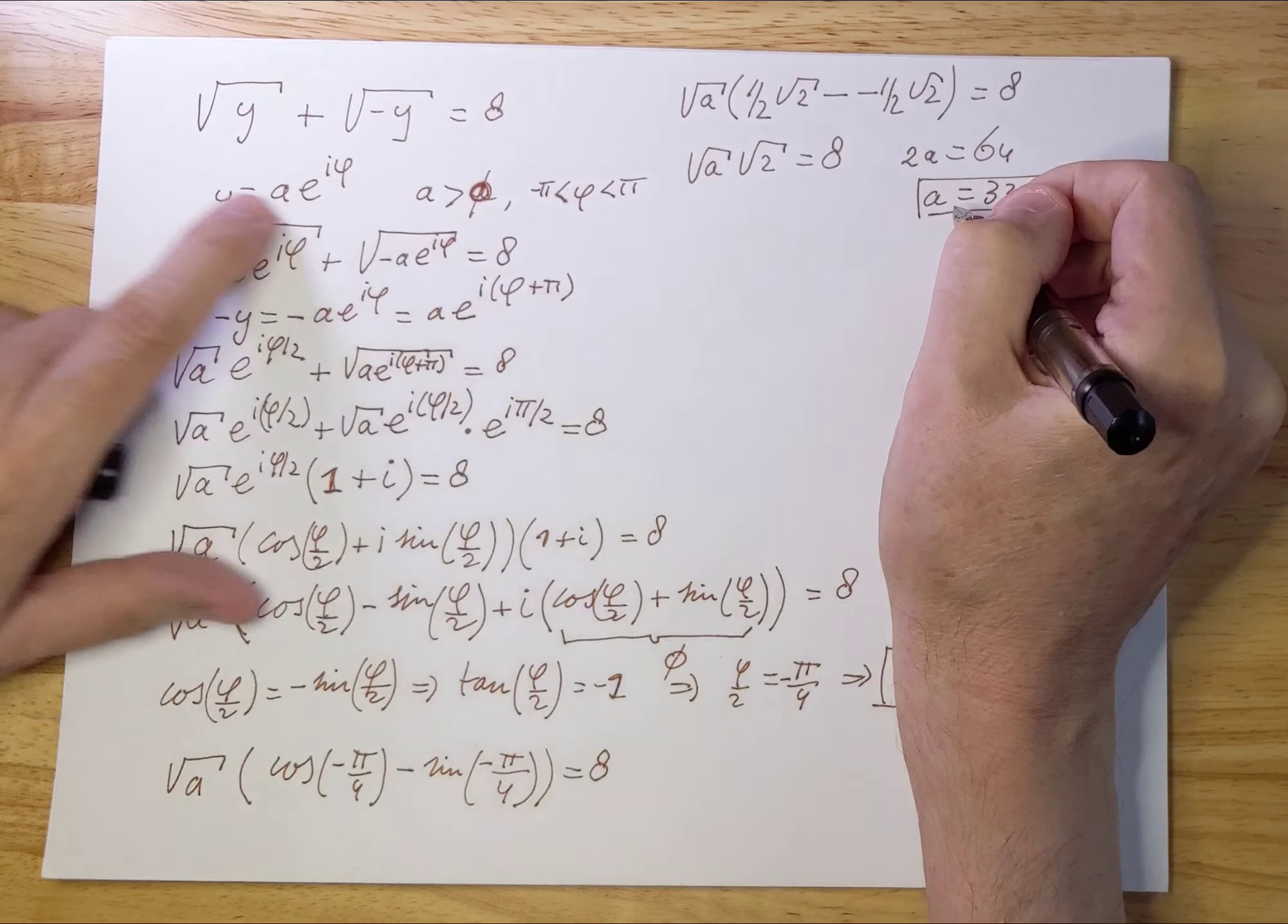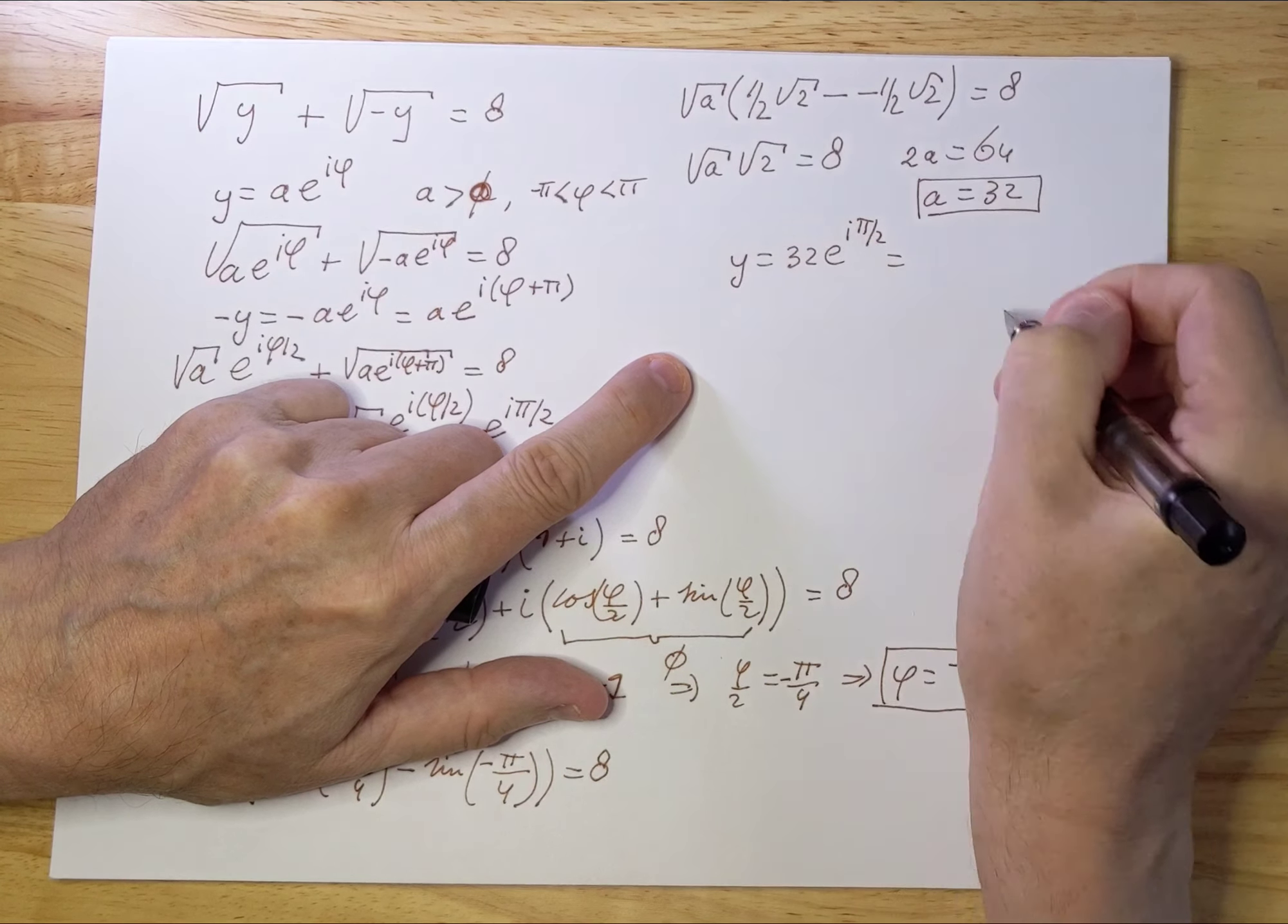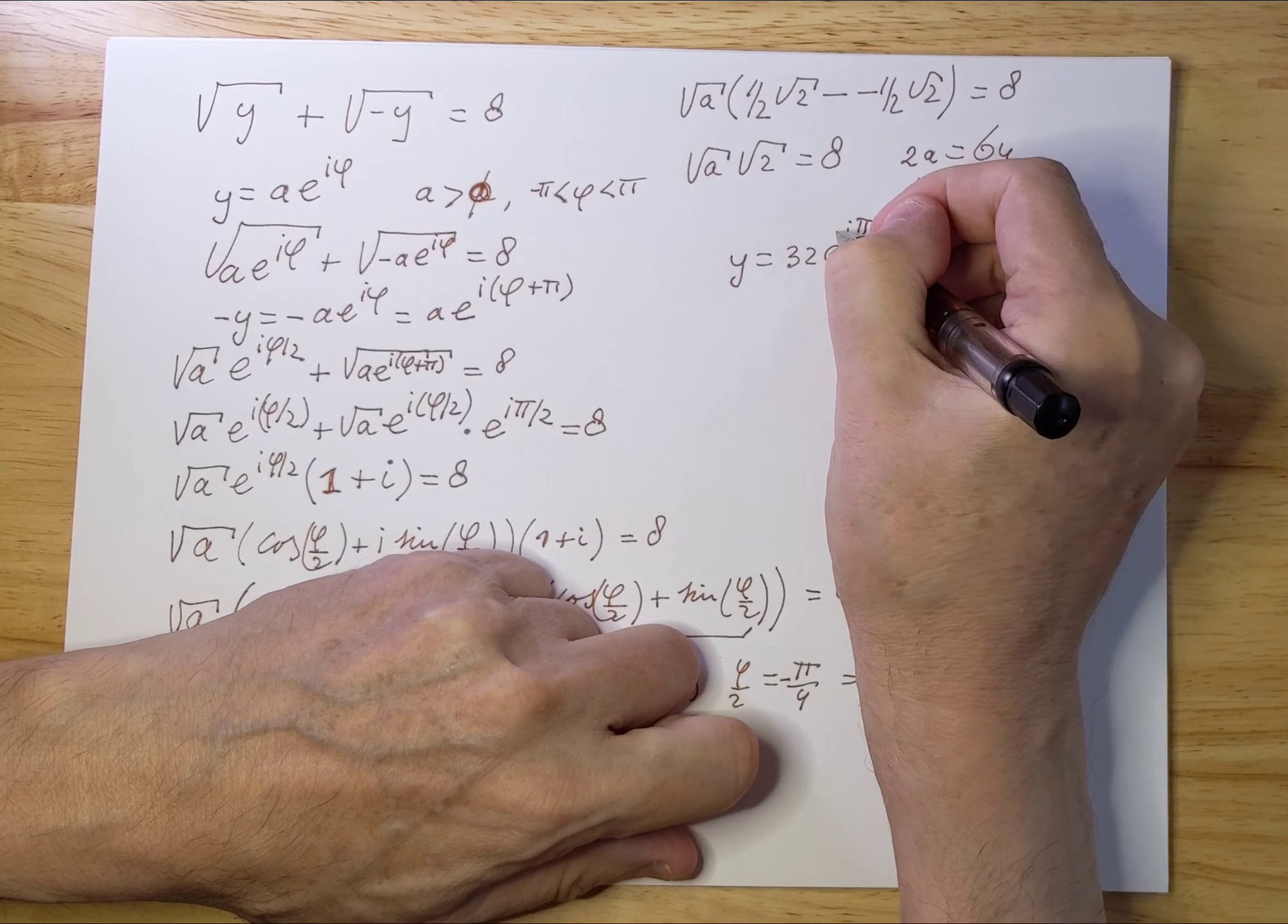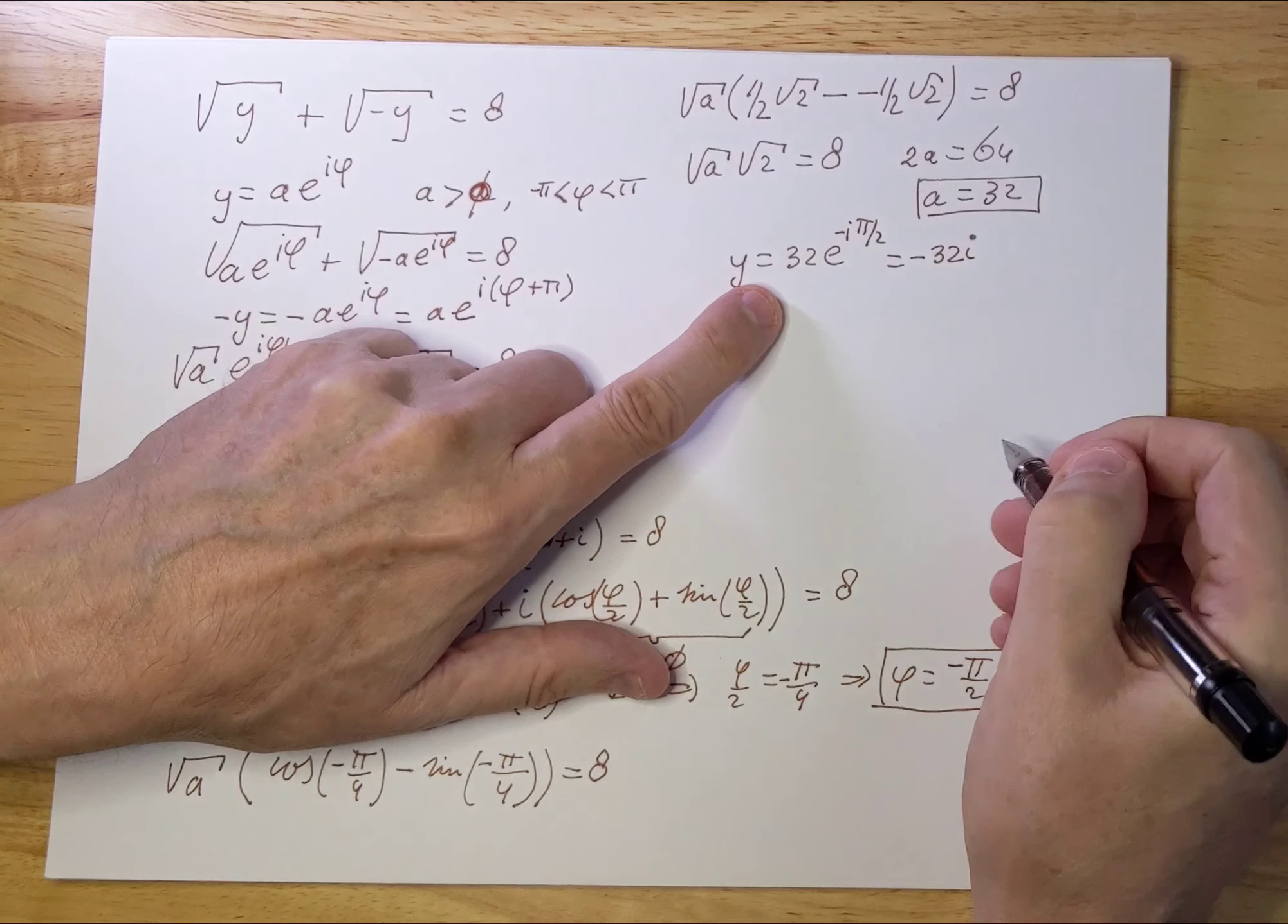So now we have a solution: y = 32e^(i(-π/2)), because we determined that φ = -π/2. So we can fill that out and say that equals -32i. That's one solution.